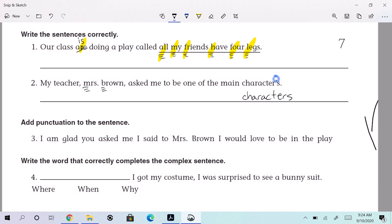You don't need the apostrophe S because are we showing something belonging to the characters? No. So we want that to just be an S, right? No apostrophe S. So my teacher, Mrs. Brown, asked me to be one of the main characters. I think we're good now. So on this one, we have one, two, and three.